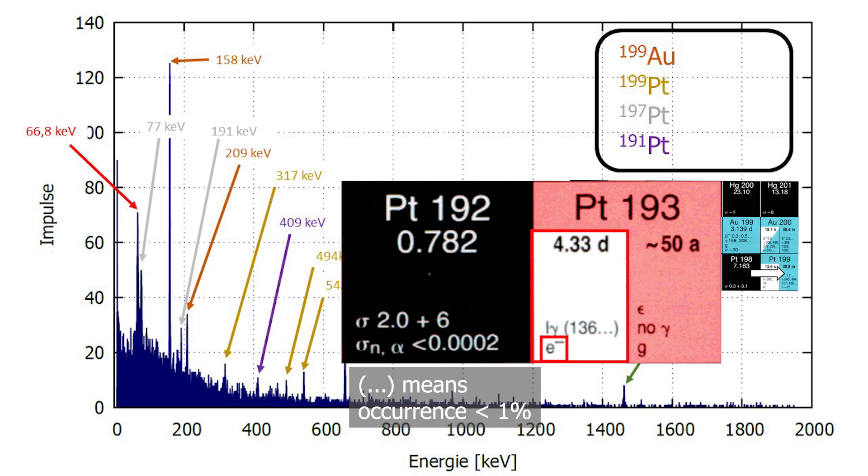The isomeric transition occurs mainly via conversion electrons, which we can't measure because I was using this gamma detector. Platinum 193 has a too-long half-life, and it doesn't emit gammas, which is why they are not visible in the gamma spectrum.